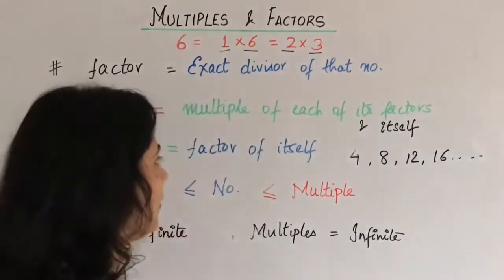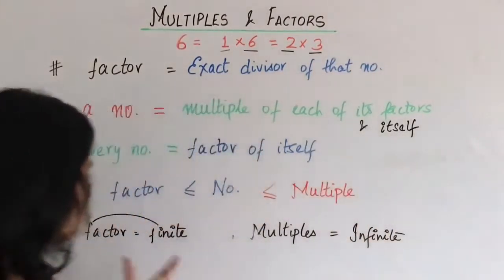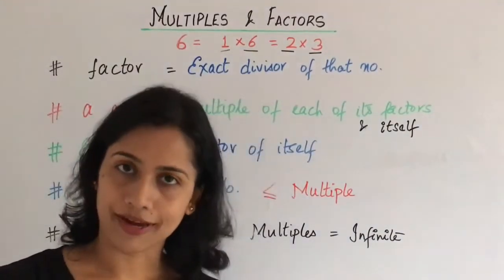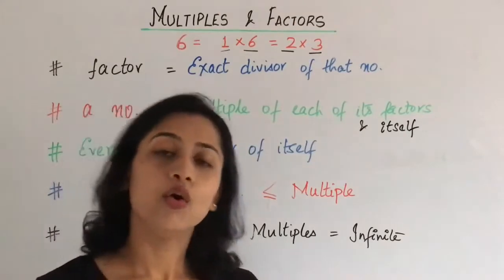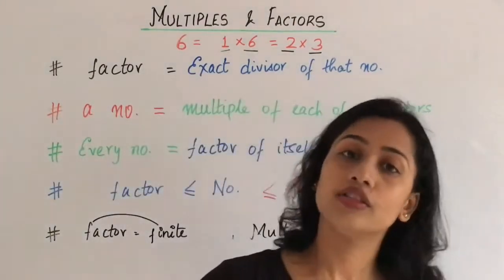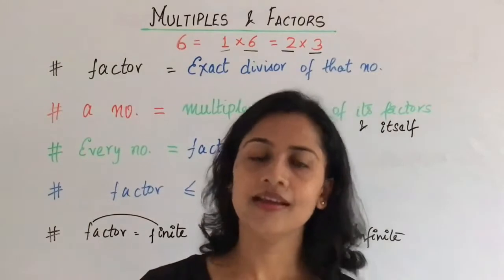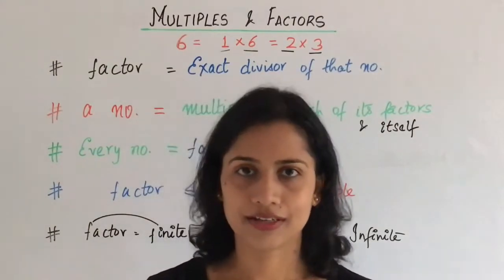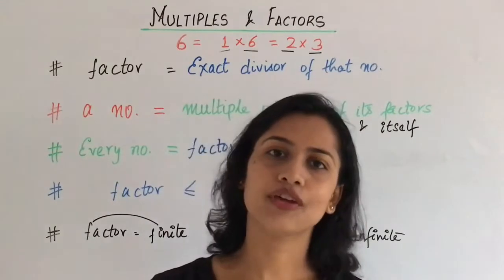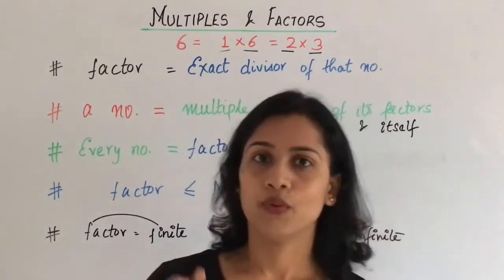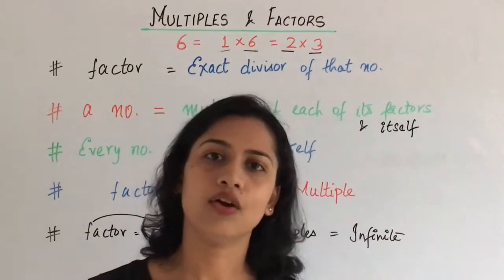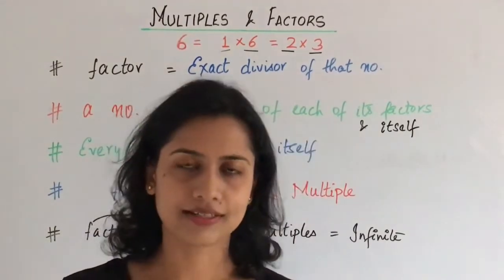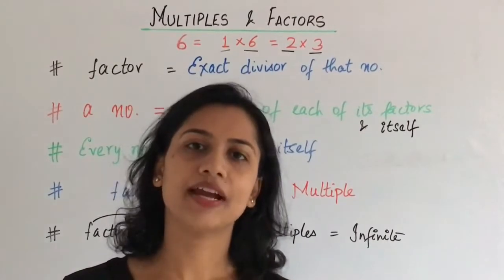The next property which we have already seen is that if we take factors for a number, the value will always be finite. And when we talk about multiples, this value is always going to be infinite. So this is what you have for factors and multiples. One is a factor of each and every number.